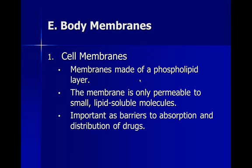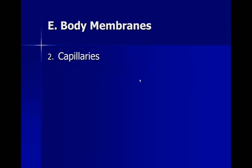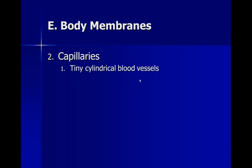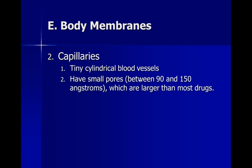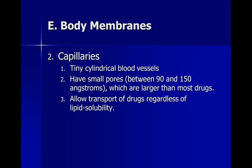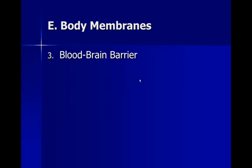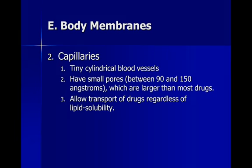Cell membranes serve as barriers to the absorption and distribution of drugs into cells, and tightly packed cells will prevent drugs from passing through. Capillaries — the very small blood vessels — provide another route for drug distribution. They have tiny cylindrical blood vessels with pores between 90 and 150 angstroms, which is large enough for most drugs to pass through, allowing drugs to transport across capillary boundaries regardless of whether they're lipid-soluble.